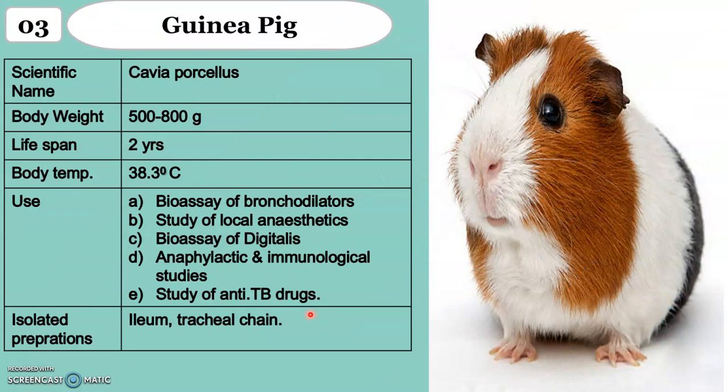Animal Number 3 is guinea pig, also called Cavia porcellus. Body weight: 500 to 800 grams. Lifespan: about 2 years. Body temperature: 38.3 degrees Celsius. Guinea pig is generally used for bronchodilator studies, digitalis, and tuberculosis. It is very sensitive for bronchodilators and haematological studies, which is why it is preferred. The isolated part is the ileum and tracheal chain.